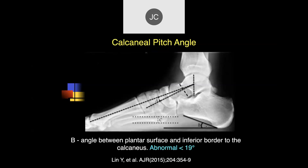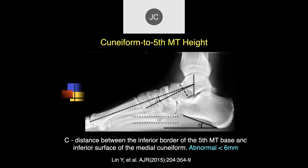The calcaneal pitch angle is measured between the horizontal line and the inferior surface of the distal calcaneus — abnormal if less than 19 degrees. This measures pes planus where the midfoot is starting to drop and the arch flattens. The cuneiform to 5th metatarsal height relates to the transverse arch, where it starts to collapse — abnormal if less than 6 degrees. There's also a talar tilt angle, where the line along the inferior tibial plafond and the superior talar dome should be parallel, within less than 5 degrees.